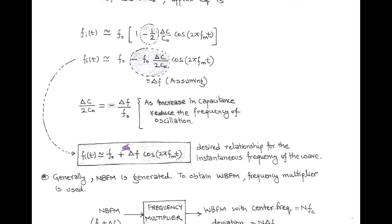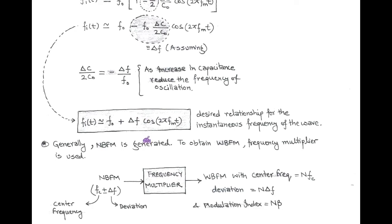Here F₀ is called the total frequency in the absence of modulation, and ΔF is called the maximum change in frequency after modulation — it is called frequency deviation. By using this method, narrow band FM is generally produced. In order to obtain wide band FM, a frequency multiplier can be used.